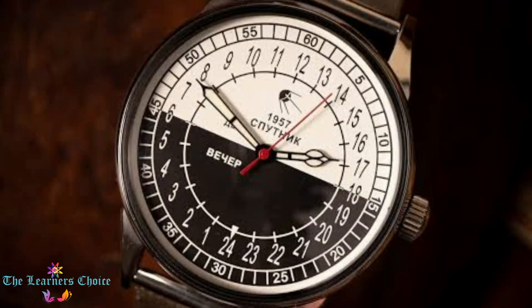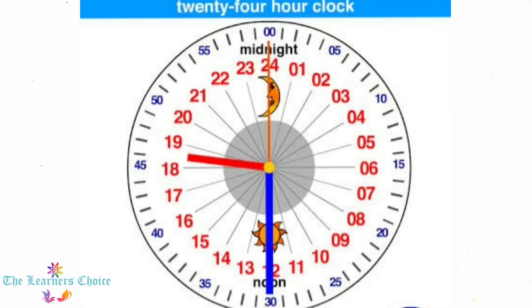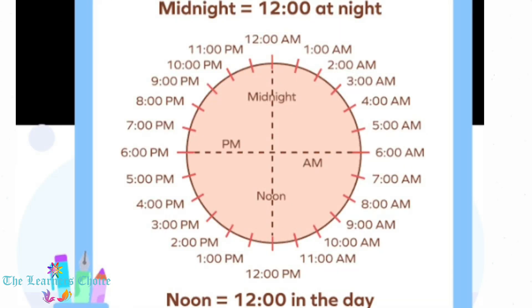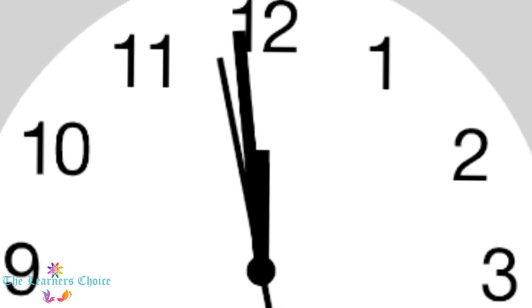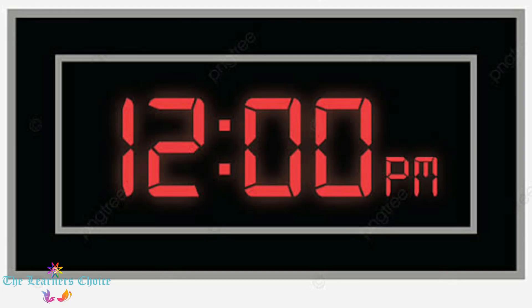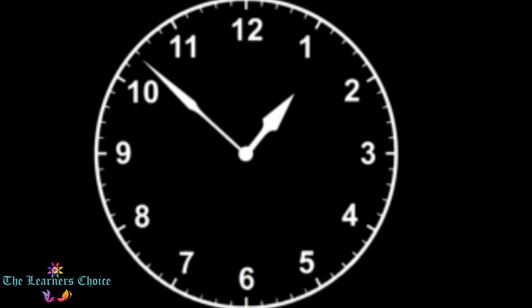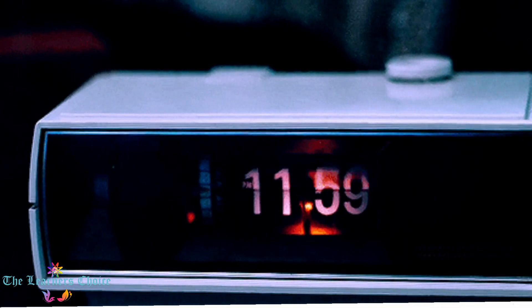The 12-hour time system divides the 24-hour day into two equal parts of 12 hours each. The time is represented by numbers 1 to 12, where 12 is the start, followed by 1 to 11. The counting of the time starts with AM at midnight, which is usually written as 12 AM or 12 midnight, then continues till 11:59 AM. When the time reaches noon, it changes to PM, and the time is written as 12 PM or 12 noon. Thereafter, it continues till 11:59 PM and switches back to AM at midnight, and this cycle of time continues.